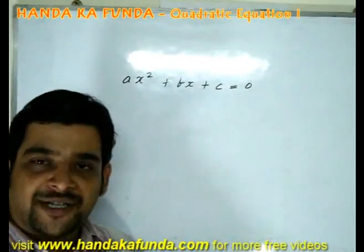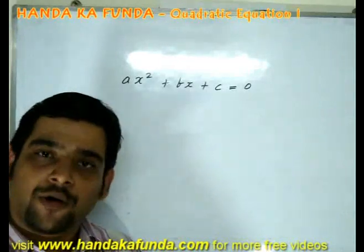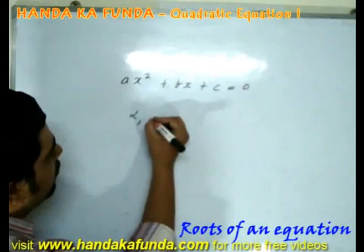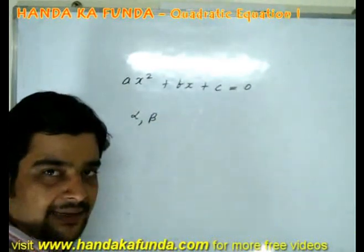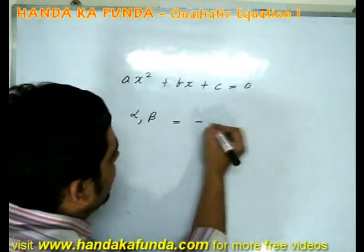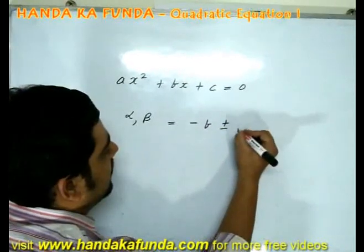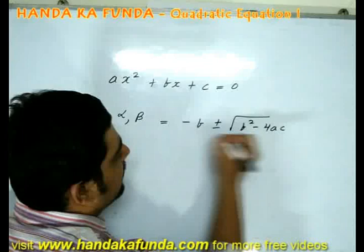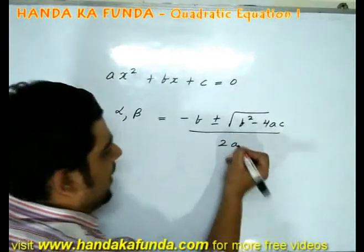This particular equation can have a maximum of two roots. Let us look at them. The two roots of the equation are alpha and beta. They are given by minus b plus minus square root of b square minus 4ac upon 2a.